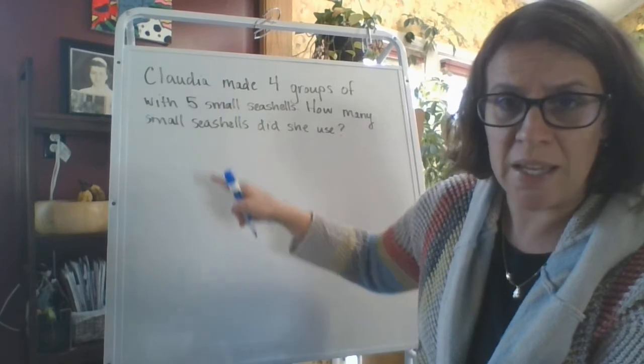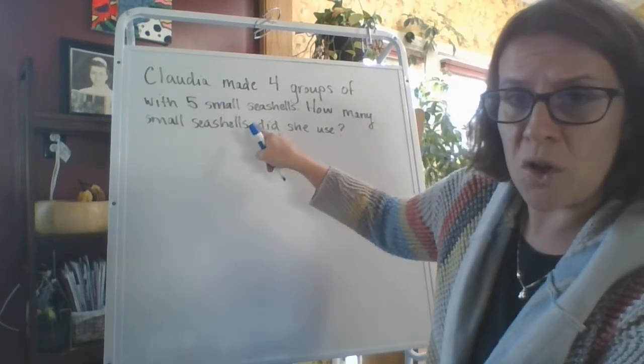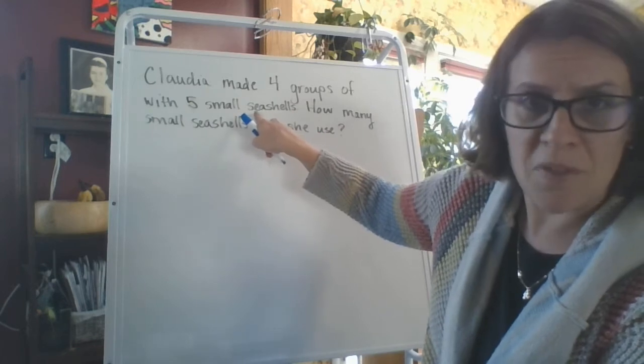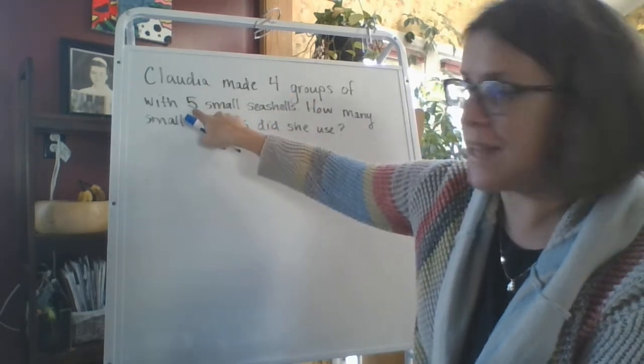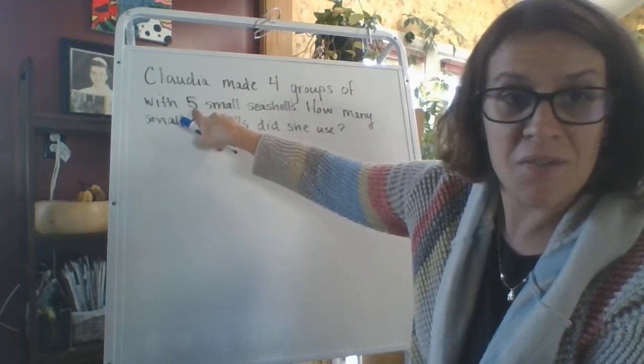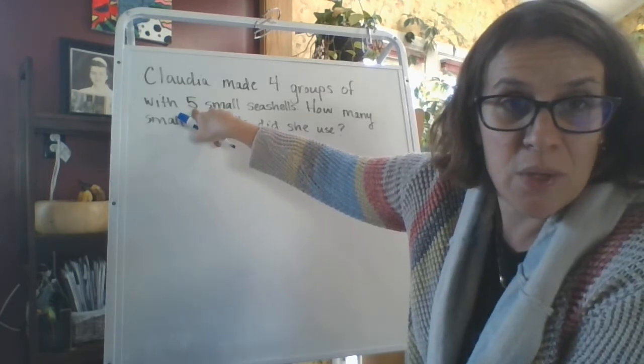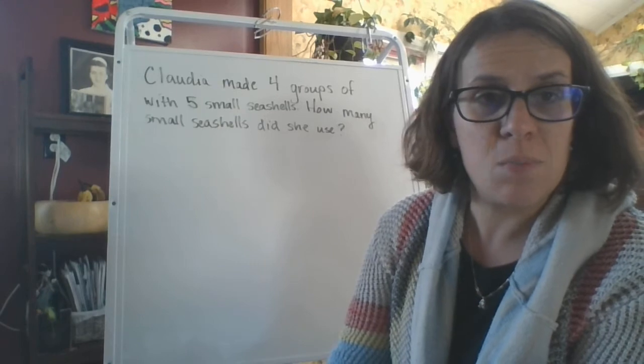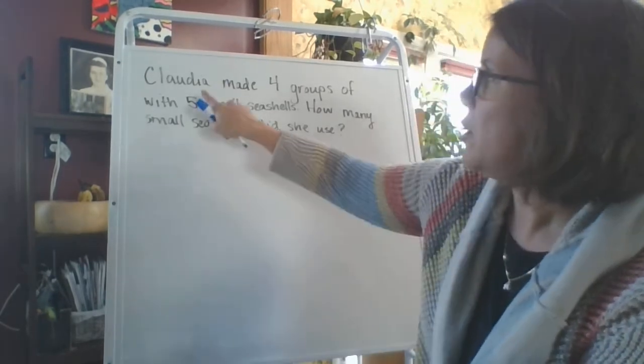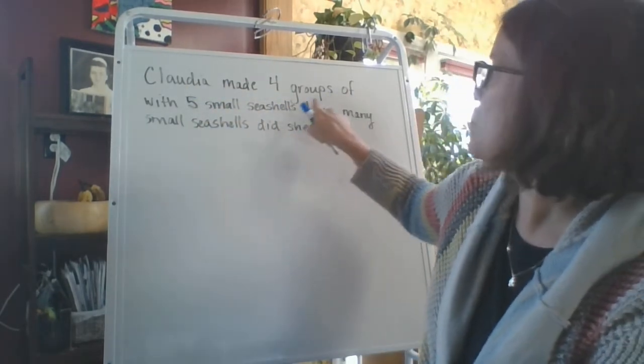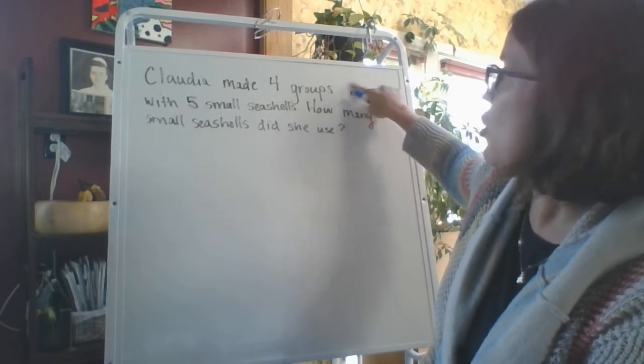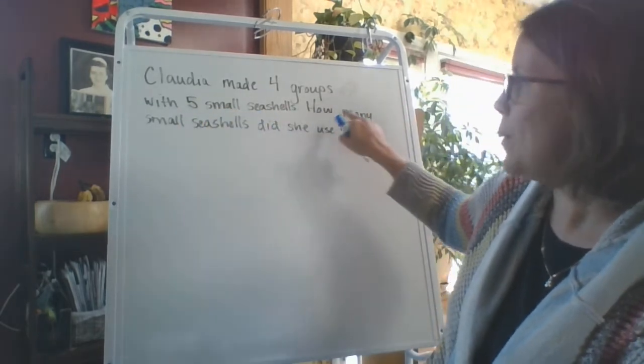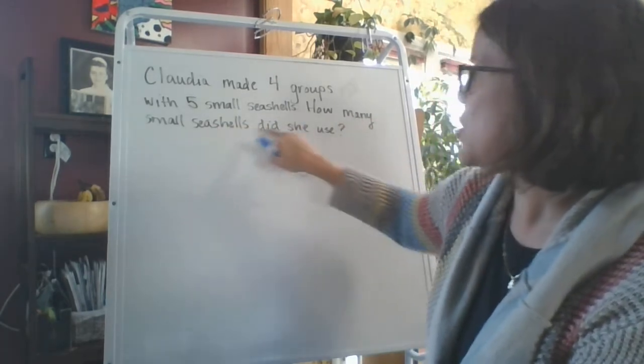So I'm going to start by getting you started with the Claudia made the groups of seashells problem. The only thing is I've changed the number, because if I didn't, then I'd basically be doing it for you. But I wanted to give you an example of how to at least begin to attack this problem. So Claudia made four groups. There's no of. With five small shells.